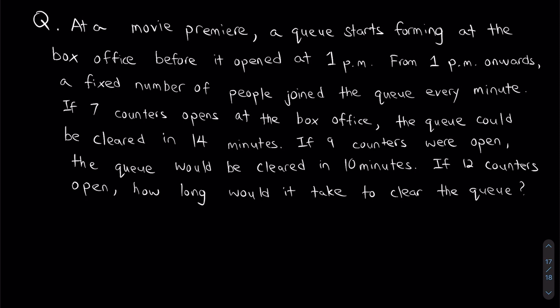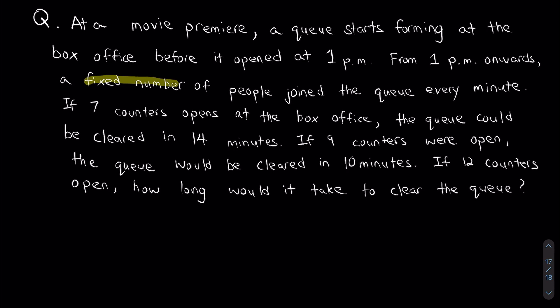So let's read the question first. The question says, at a movie premiere, a queue starts forming at the box office before it opens at 1pm. And from 1pm onwards, a fixed number of people join the queue every minute. This is quite important, the fact that it's a fixed number. So the people every minute don't change. That's pretty important information. So I'm going to highlight it first.